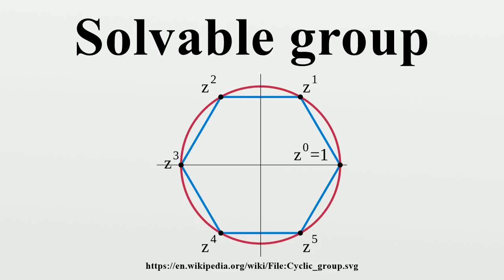Numbers of solvable groups with order n are: 0, 1, 1, 1, 2, 1, 2, 1, 5, 2, 2, 1, 5, 1, 2, 1, 14, 1, 5, 1, 5, 2, 2, 1, 15, 2, 2, 5, 4, 1, 4, 1, 51.